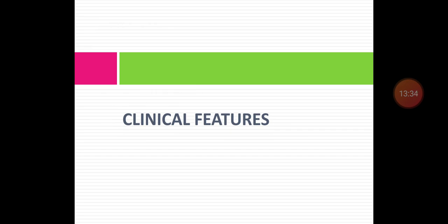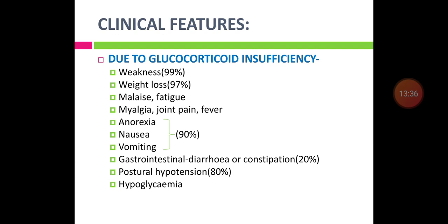The clinical features of adrenal insufficiency depend on which hormone is deficient. Glucocorticoid deficiency results in: weakness (99%), weight loss (97%), anorexia (90%), nausea, vomiting, malaise, fatigue, myalgia, joint pain, and fever.